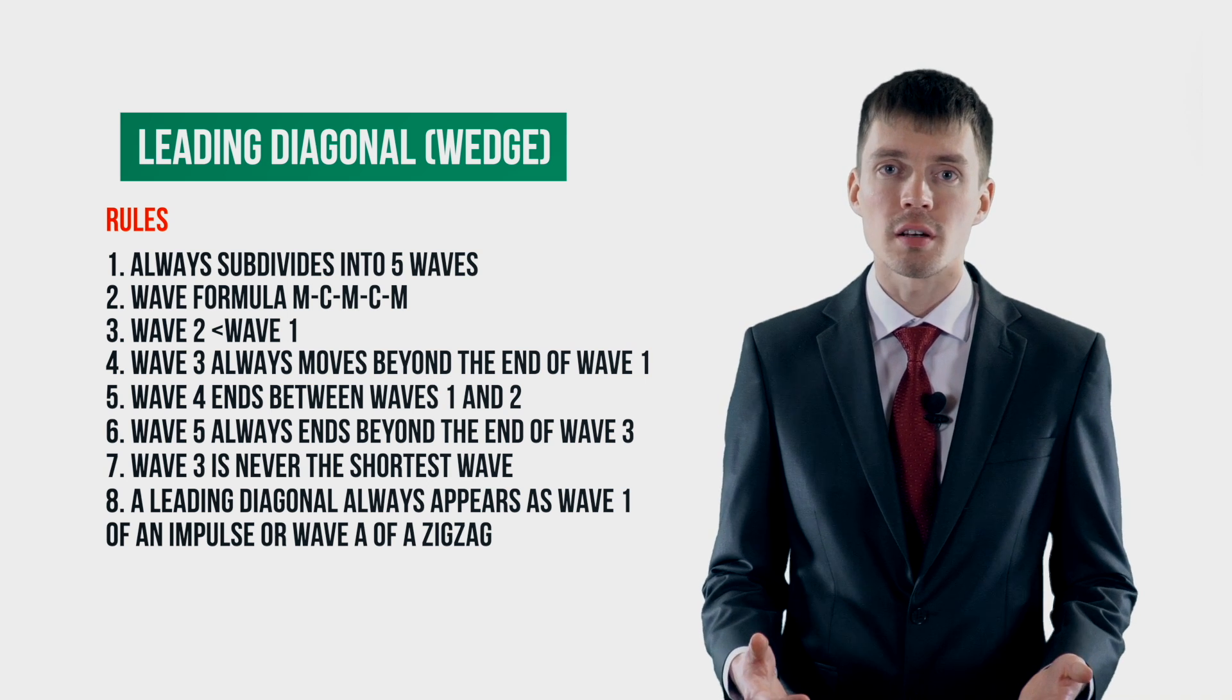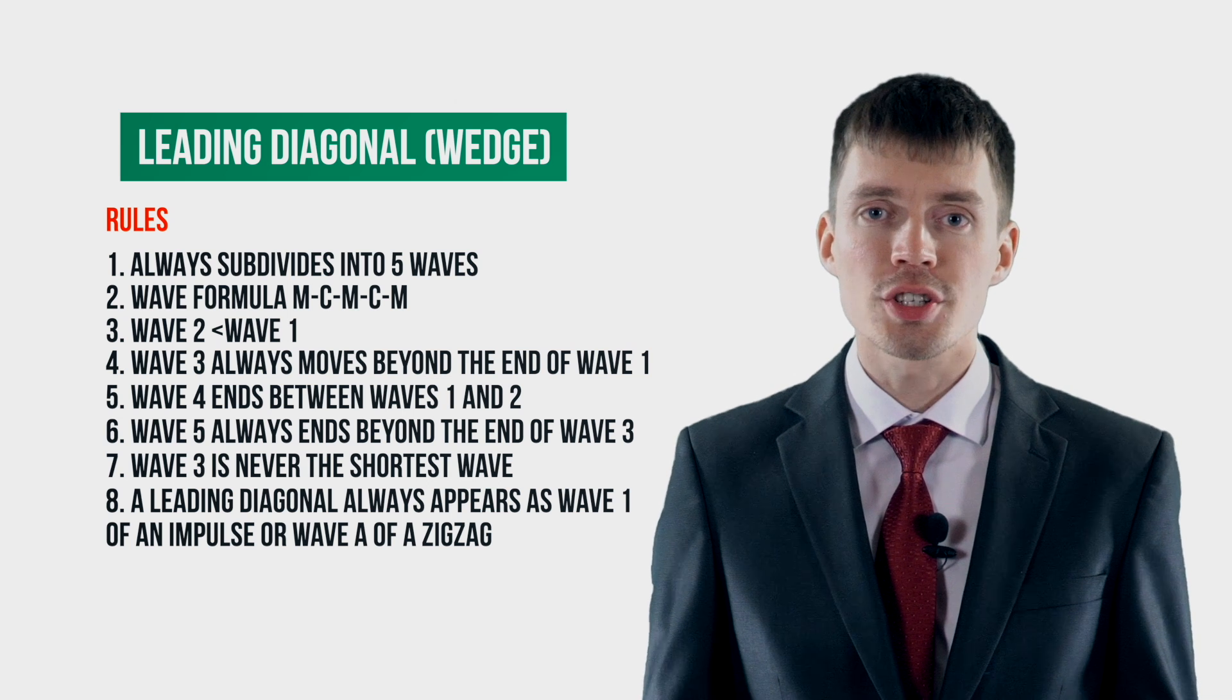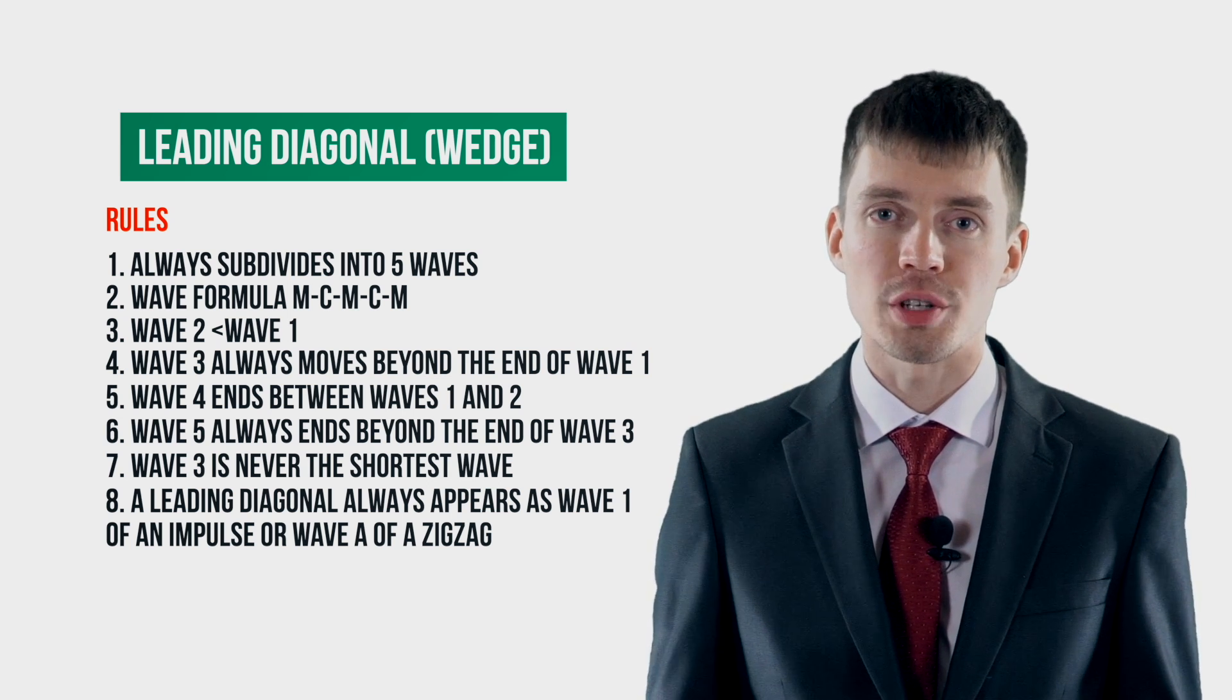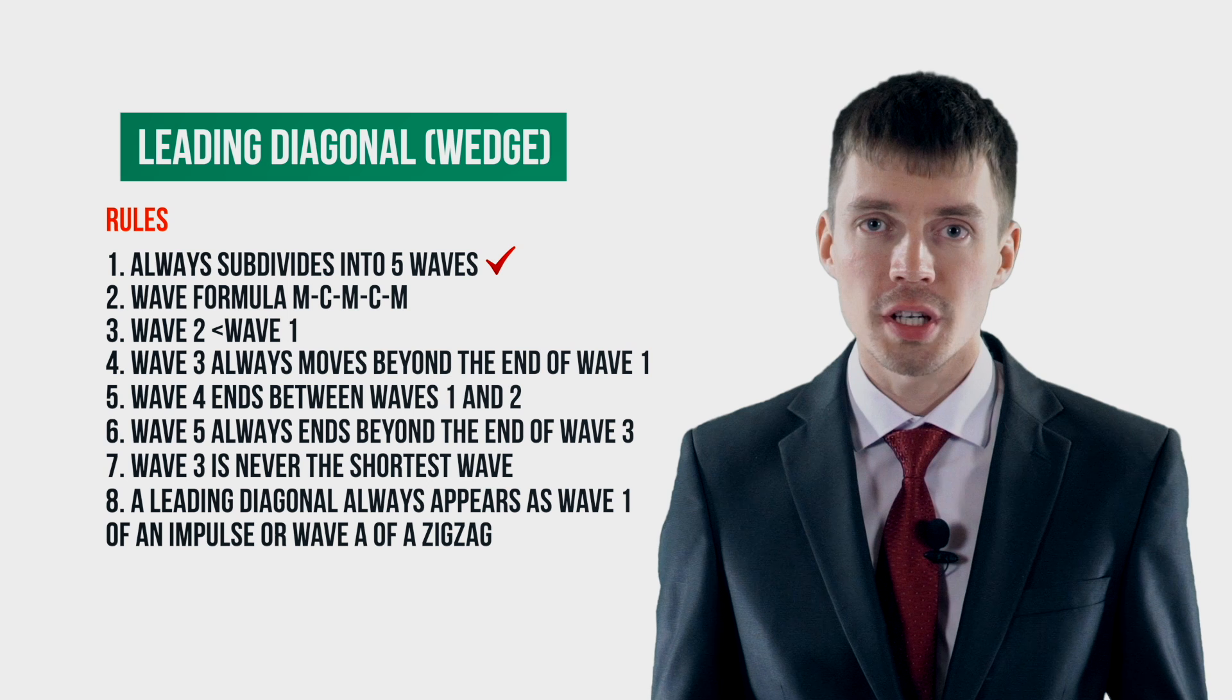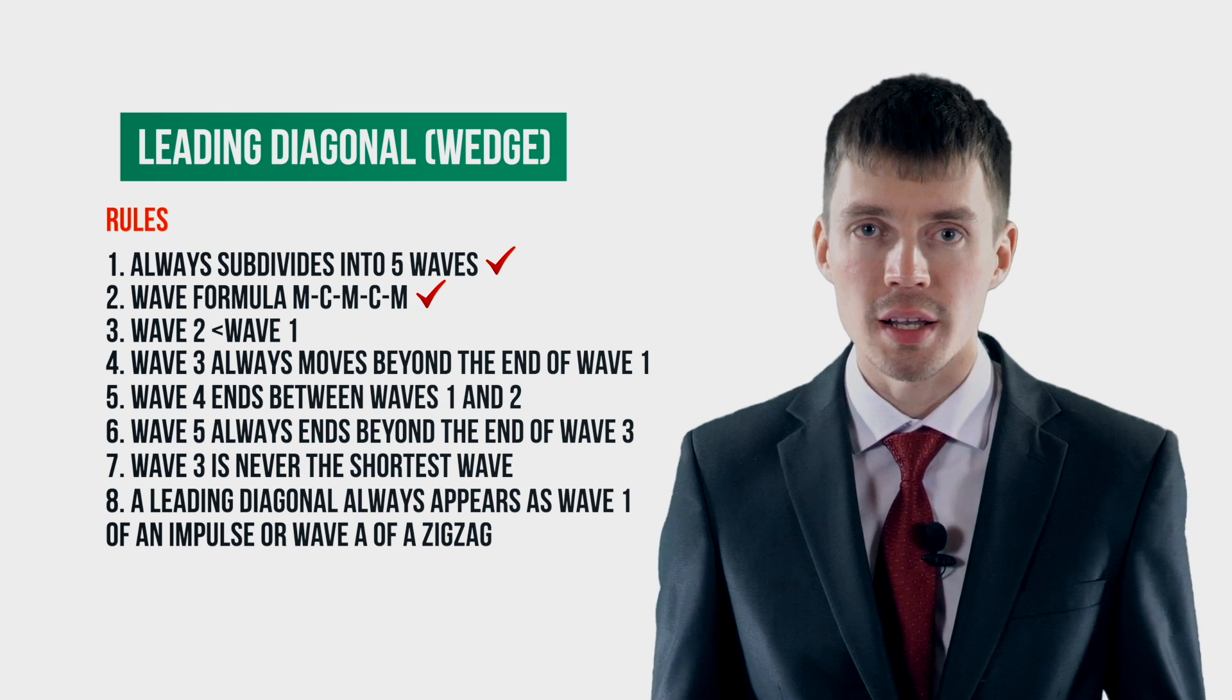Now let's see how these rules are implemented for the downward model. A downward leading diagonal also consists of five sub waves, as well as the upward model, and the internal structure of the descending leading diagonal and the ascending leading diagonal are the same.